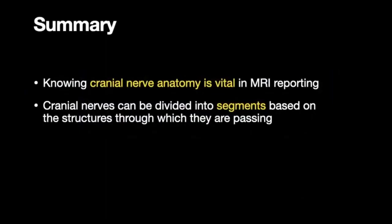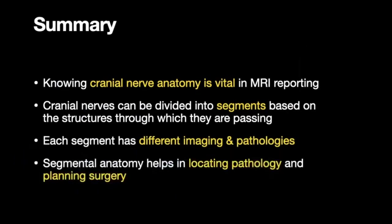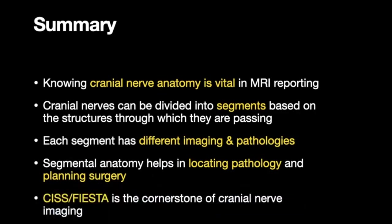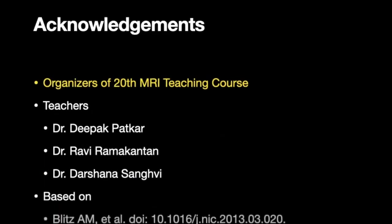In summary, knowing cranial nerve anatomy is vital in MRI reporting. Cranial nerves can be divided into segments based on the structures through which they are passing, and each segment has different imaging characteristics and pathologies. Segmental anatomy helps in locating pathology and planning surgery. CISS and FIESTA are the cornerstone of cranial nerve imaging. This talk is based on the excellent article by Blitz AM et al. Thank you very much.